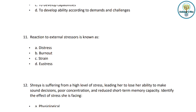Next question: Reaction to an external stressor is known as what? Options: distress, burnout, strain, or eustress. As you have read in this chapter, strain is the correct answer. Strain is what occurs when we give a reaction to different external stressors. Remember this — strain is the reaction to external stressors.